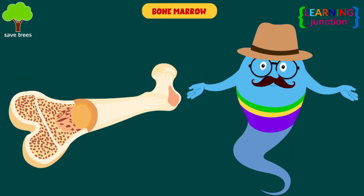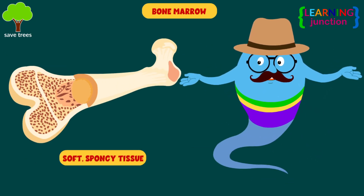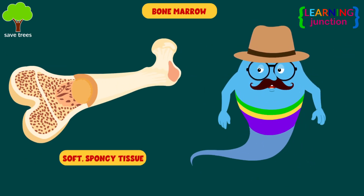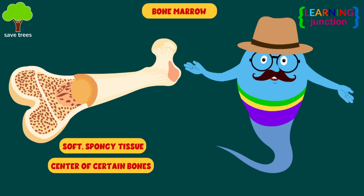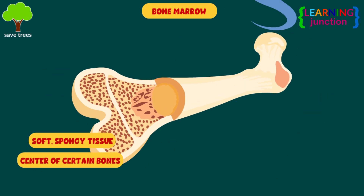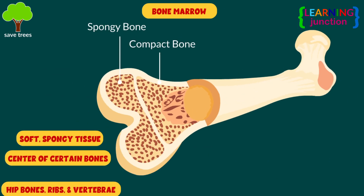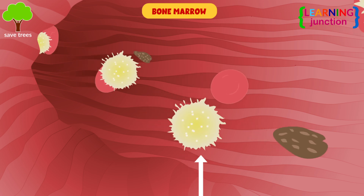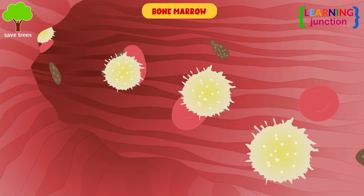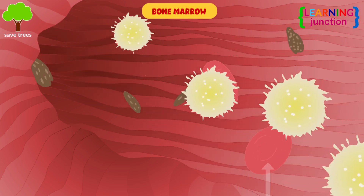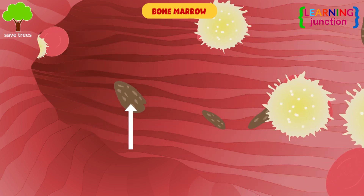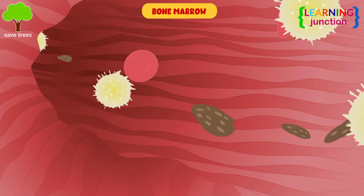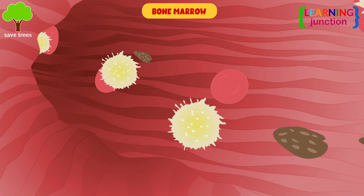Bone marrow is the soft, spongy tissue in the center of certain bones, such as the hip bones, ribs, and vertebrae. White blood cells, red blood cells, and platelets are made in the bone marrow.